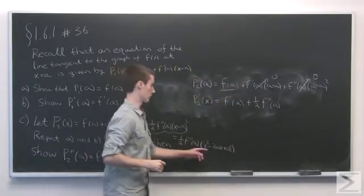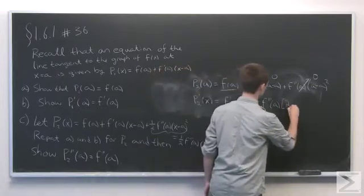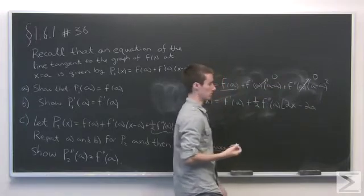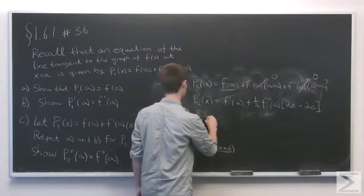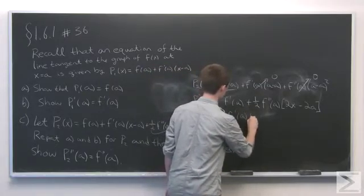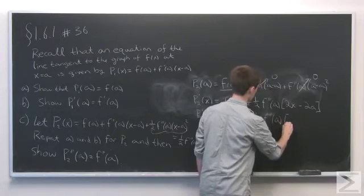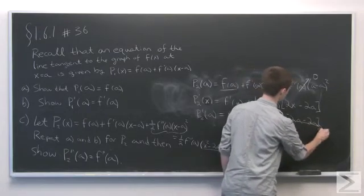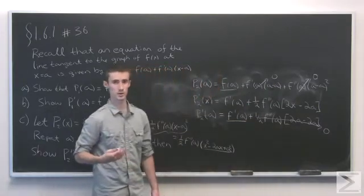And now we just have to compute the derivative of this term here. So that will be 2x - 2a, and the derivative of a² will just be zero. So now if we evaluate this at the point a, we see we end up with f'(a) + (1/2)f''(a) times (2a - 2a). So the entire last term just goes to zero and we're left with f'(a). So we see that the first derivative does indeed agree.